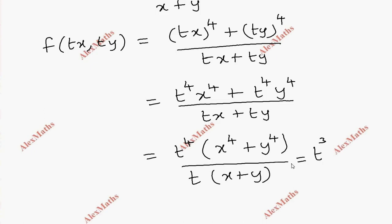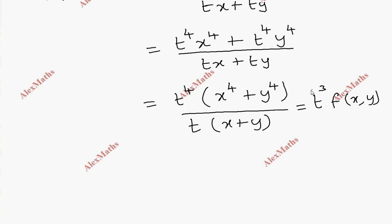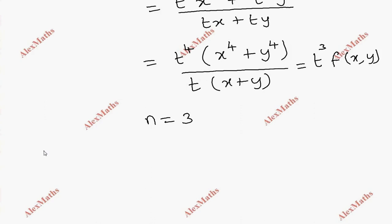That is equal to f of x, y. So the power n is equal to 3. This is a homogeneous function. The degree is 3. By Euler's theorem, x into ∂f/∂x plus y into ∂f/∂y equals n times f.